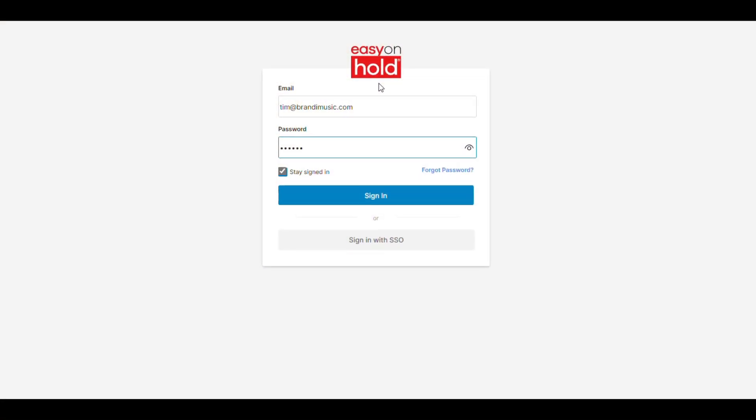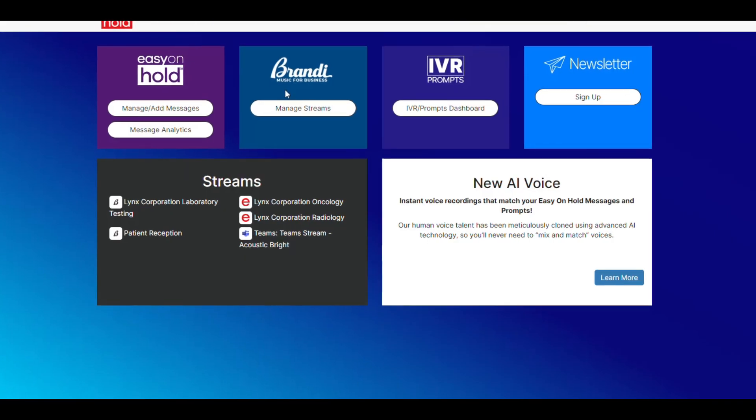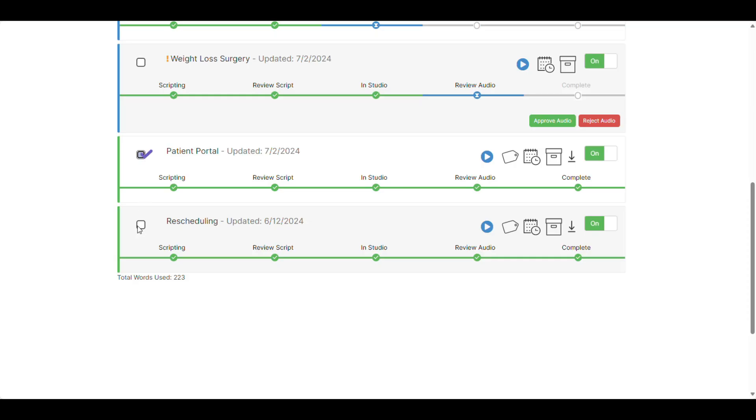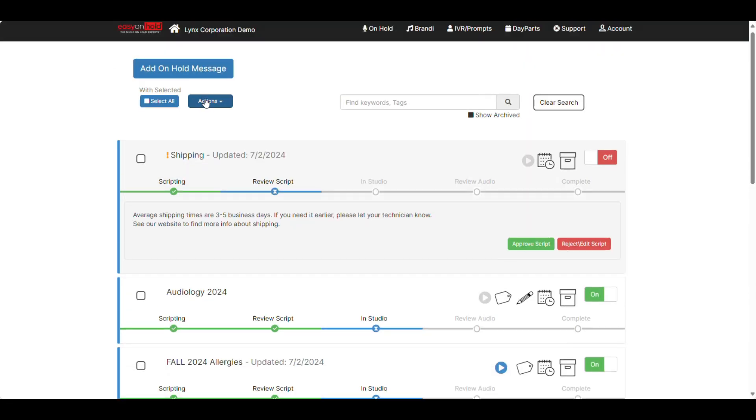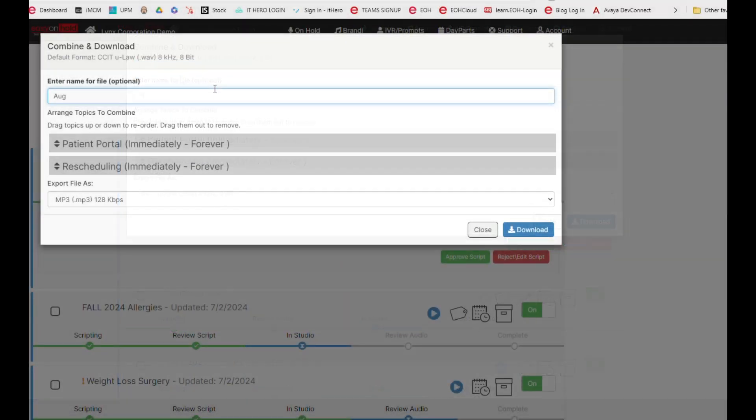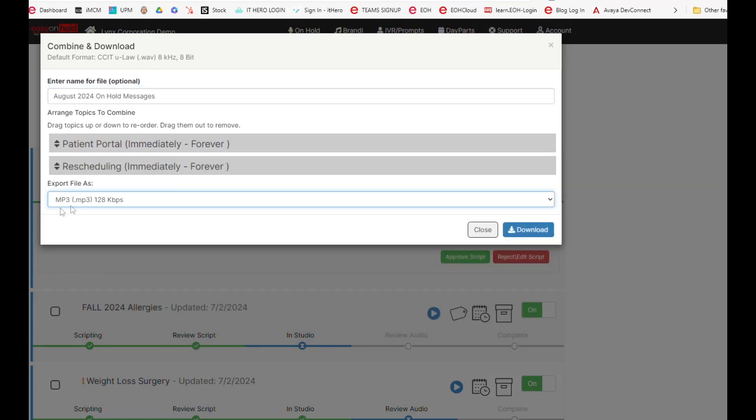Retrieve your audio by logging into your Easy on Hold account. Check the box to the left of each message you want to download. Scroll up to the Actions button and click Combine and Download. Create a name for the file. You can also easily change the order of each message. Choose the MP3 file format and click Download.